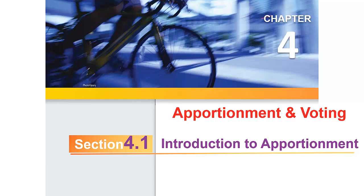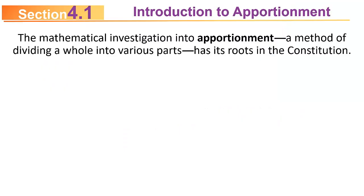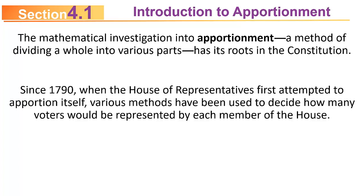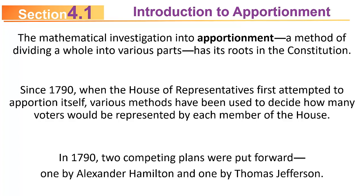Today we'll cover section 4.1, which is an introduction to apportionment. The mathematical investigation into apportionment, which is a method of dividing a whole into various parts, has its roots in the Constitution. Since 1790, when the House of Representatives first attempted to apportion itself, various methods have been used to decide how many voters will be represented by each member of the House of Representatives. In 1790, two competing plans were put forward, one by Alexander Hamilton and one by Thomas Jefferson.